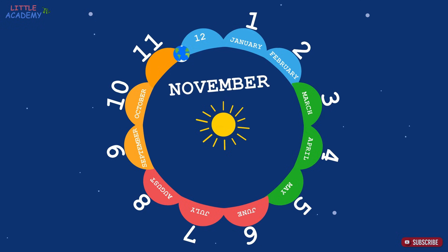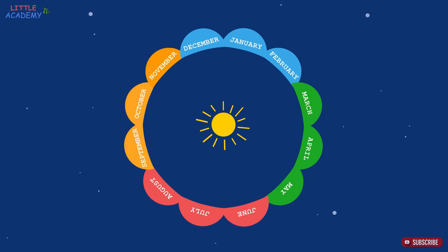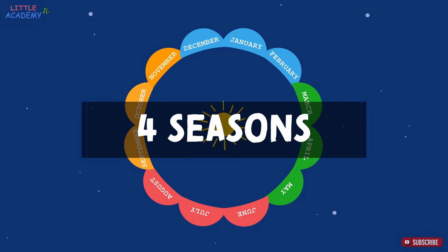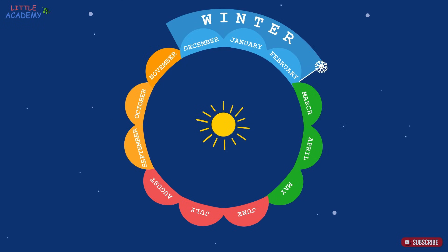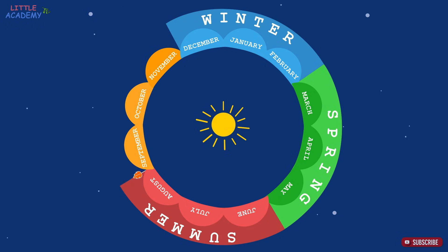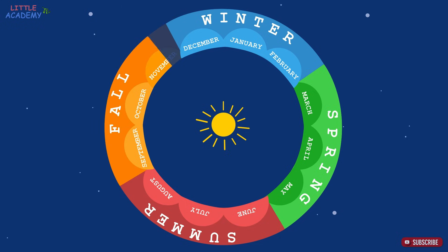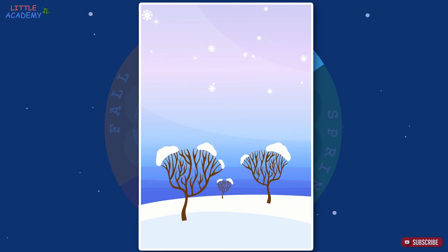And the twelfth is December. In the same way, a year is split into four seasons. They are winter, spring, summer, and fall. The winter months are December, January, and February. In the winter it's very cold outside.